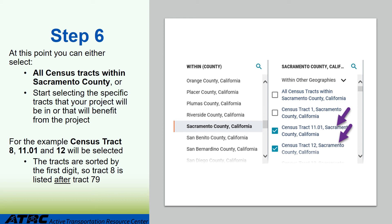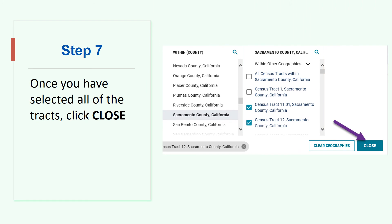For the example, census tracts 8, 11.01, and 12 will be selected. The tracts are sorted by first digits, so tract 8 is listed after tract 79. Once you have selected all the tracts, click 'Close,' indicated with the purple arrow.